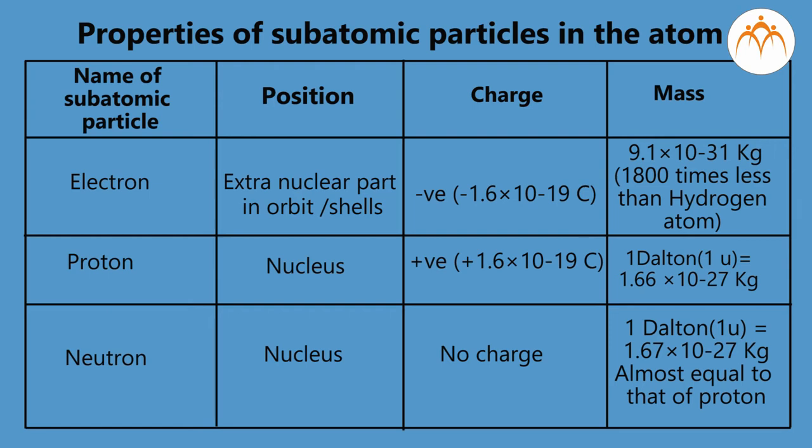Subatomic particle neutron, its position is at nucleus, it has no charge. The mass of neutron is 1 Dalton = 1.67 × 10⁻²⁷ kg, which is almost equal to that of proton.